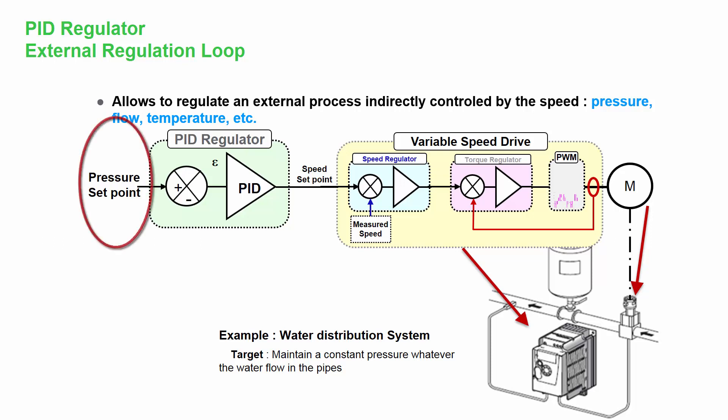So input of PID regulator is a pressure setpoint and output is a speed setpoint. Additionally, we have to connect the feedback to a PID regulator, which would be the pressure sensor from our water distribution system.